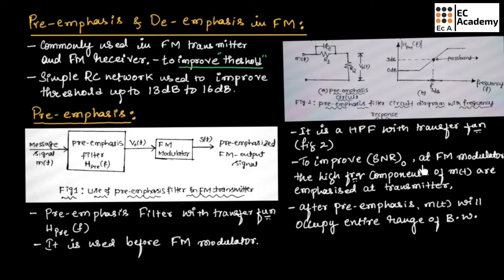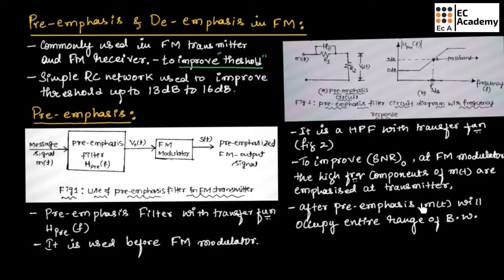To improve the signal-to-noise ratio at the FM modulator output, the high-frequency components of the message signal are emphasized at the transmitter. After pre-emphasis, the message signal M(t) will occupy the entire range of bandwidth.